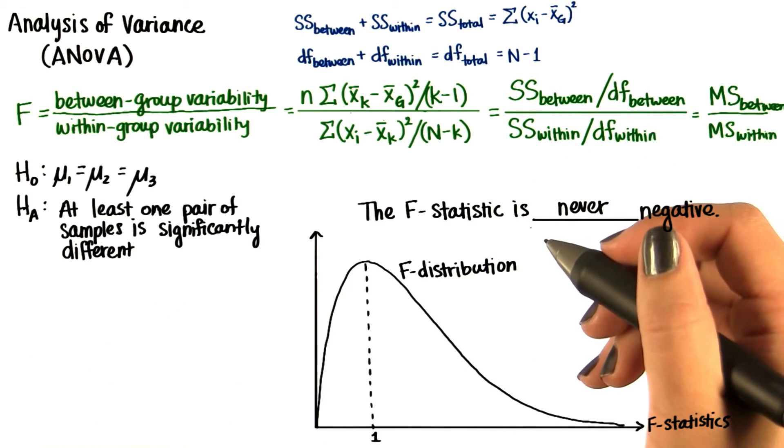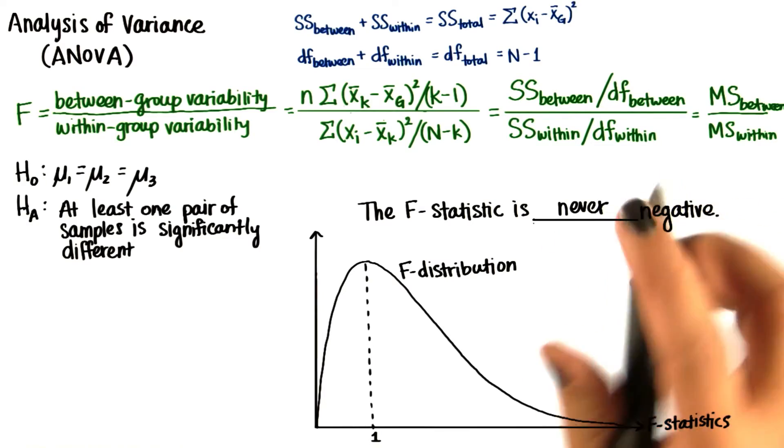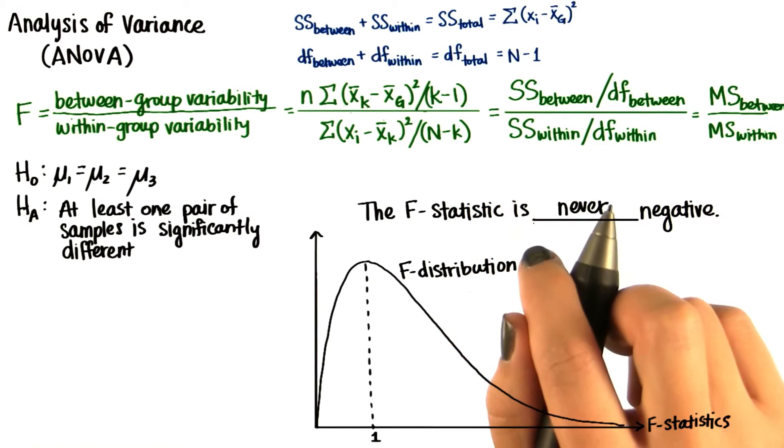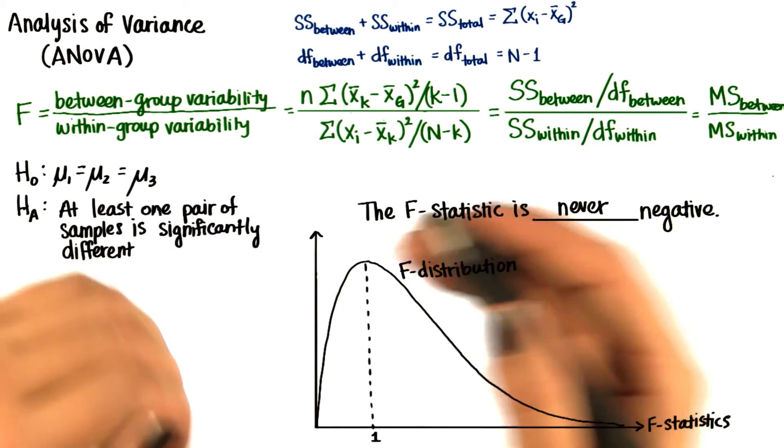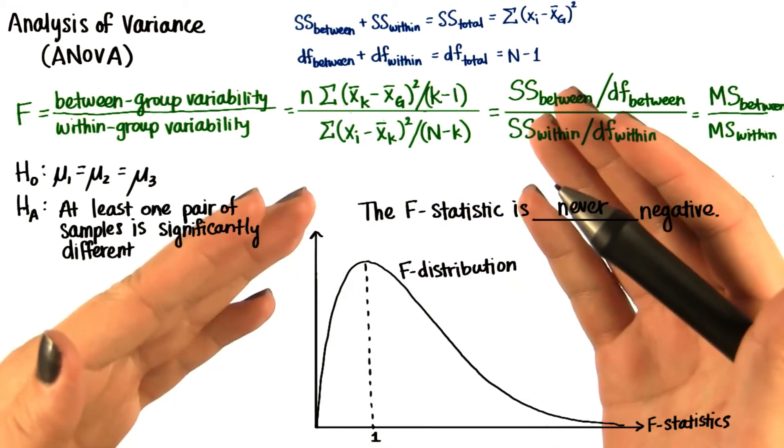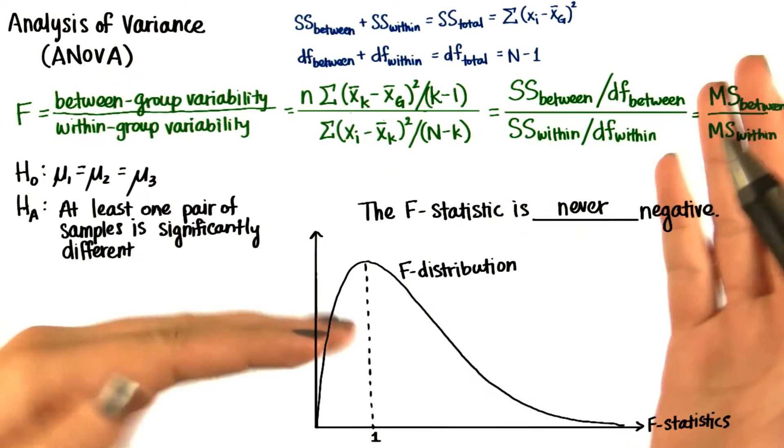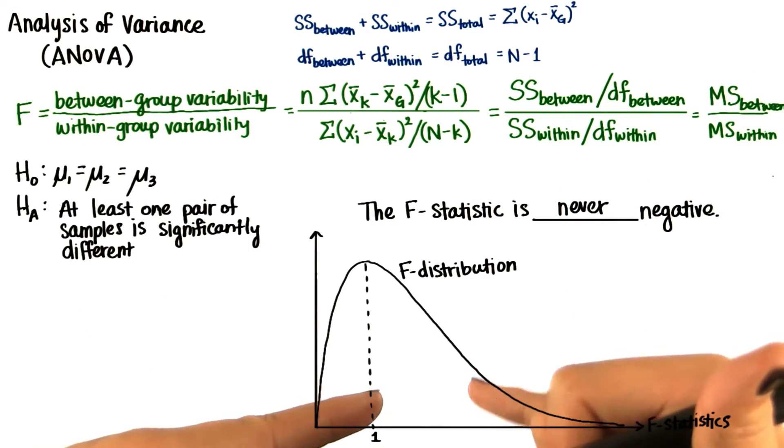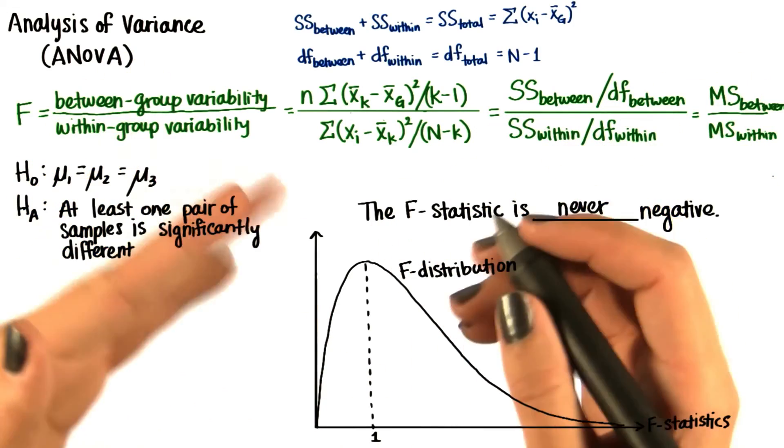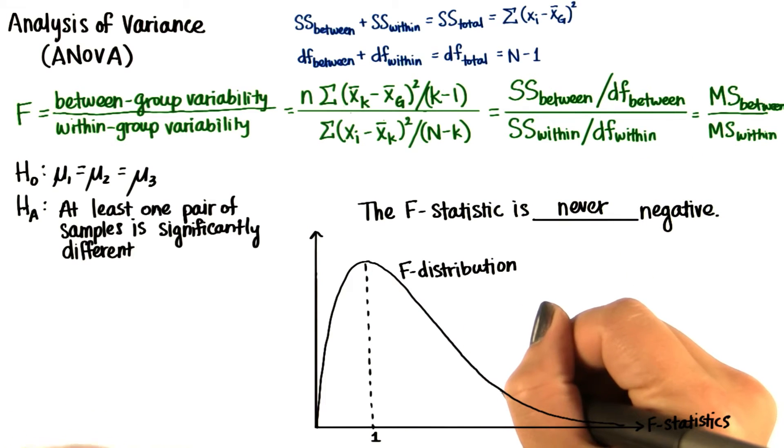Also note that when we're doing an F test, this will always be non-directional. Whereas when we were doing the z and t tests, our alternative hypothesis could have been that one population mean is less than another. With the F test, we only know if there's a significant difference. Our critical region will always be out here in the upper tail.